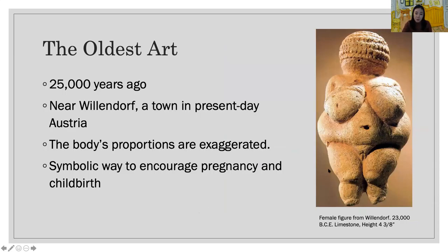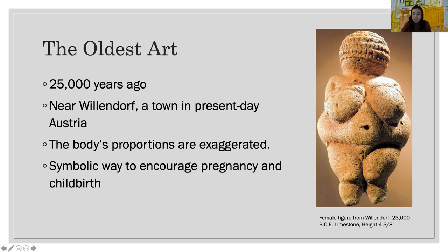This is a female figure sculpture from 25,000 BCE — 25,000 years ago. It was found near Willendorf, a town in present-day Austria. It is small enough to fit comfortably in the palm of a hand. It has a detailed hairstyle that covers the entire head, and the body's proportions are exaggerated. Scholars long assumed these were fertility figures used symbolically to encourage pregnancy and childbirth.